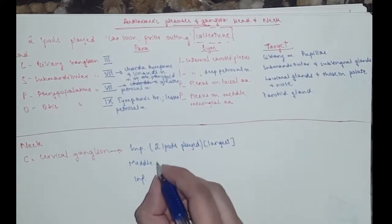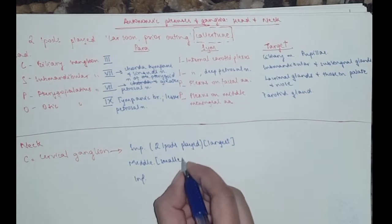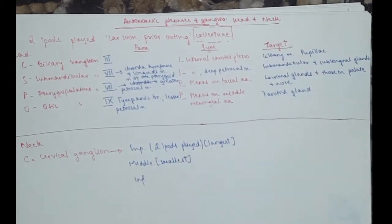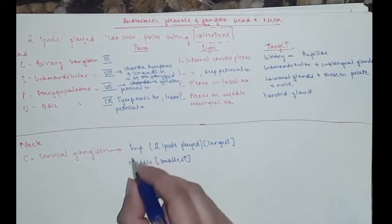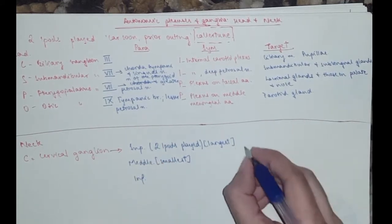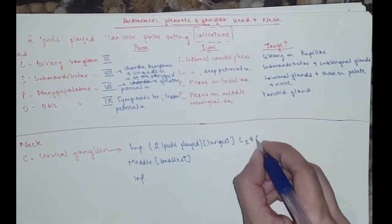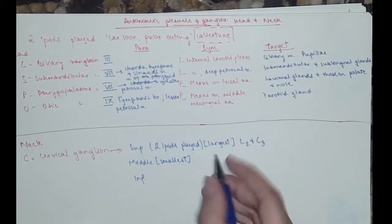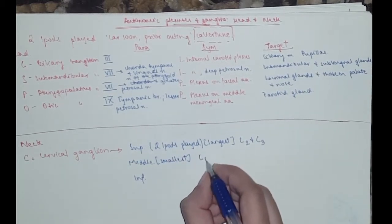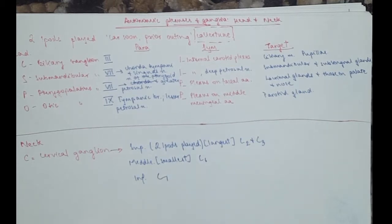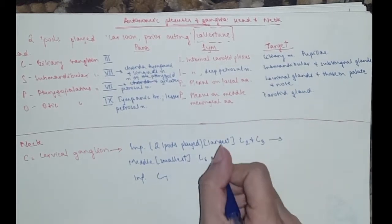And the middle one is the smallest one. So you need to know that the superior cervical ganglion is adjacent to C2 and C3. The middle one is adjacent to C6 and the inferior one is to C7.